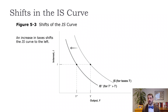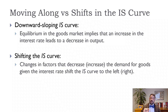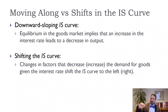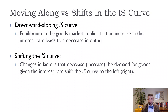Fiscal policy — government spending and taxes — operates through the goods market and shifts the IS curve. We need to keep in mind the distinction between a shift in the curve and a movement along it, just as in microeconomics with supply and demand. A change in the interest rate is a movement along the IS curve, because the interest rate is on the vertical axis and is an endogenous variable. Government spending, taxes, and autonomous consumption shift the IS curve. For example, if the interest rate decreases from six percent to four percent, that's a movement down the same IS curve.